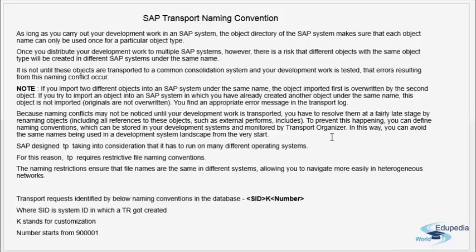If you import two different objects into an SAP system under the same name, the object imported first will be overwritten by the second object. If you try to import an object into a system where you have already created another object under the same name, the originals are not overwritten — you will find an appropriate error message in the transport log.